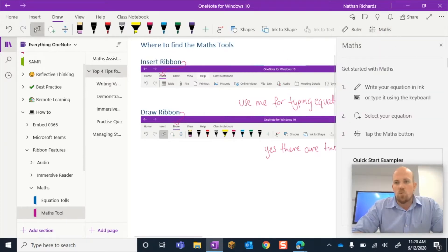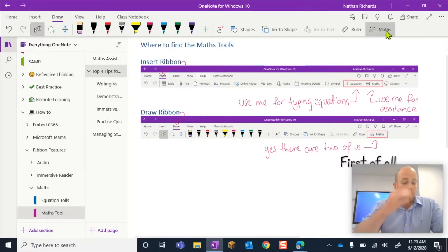And in the draw tool I can see just the maths one. The maths one is pretty much a double up of the one that's in the insert one. Please do keep in mind this will look different depending on what version of OneNote you're using. Some things will be there, some things won't be there or some things will be in a different place. So let's look at our very first tip for using the maths assistant.